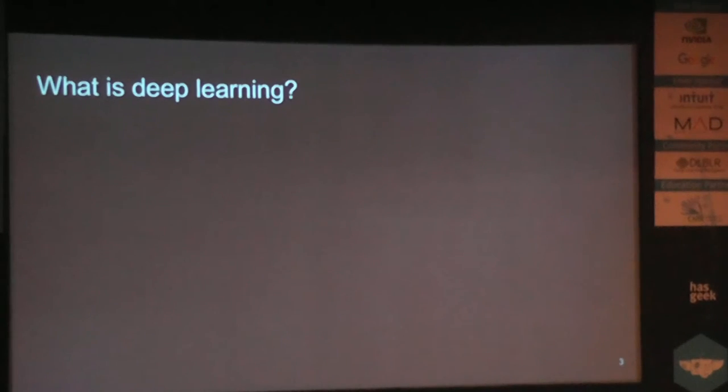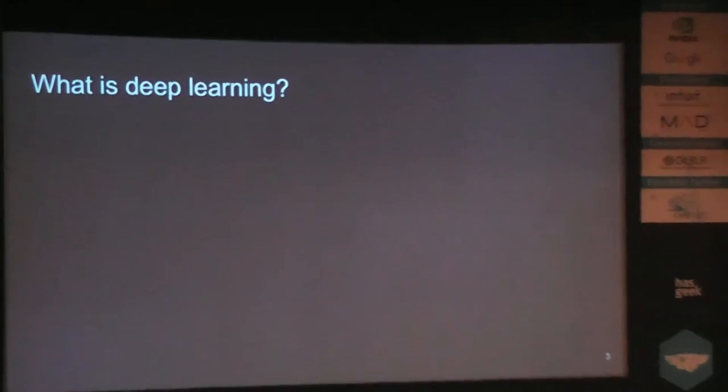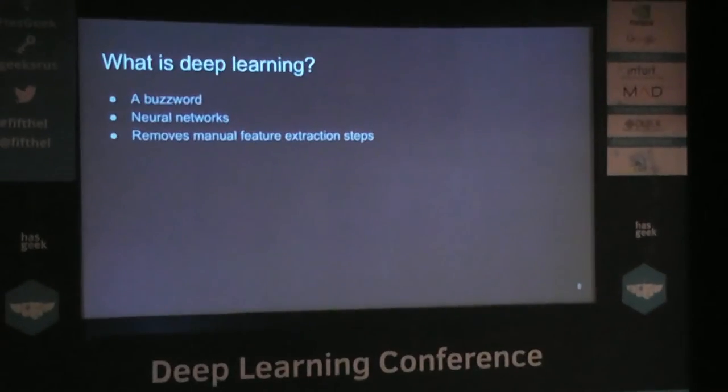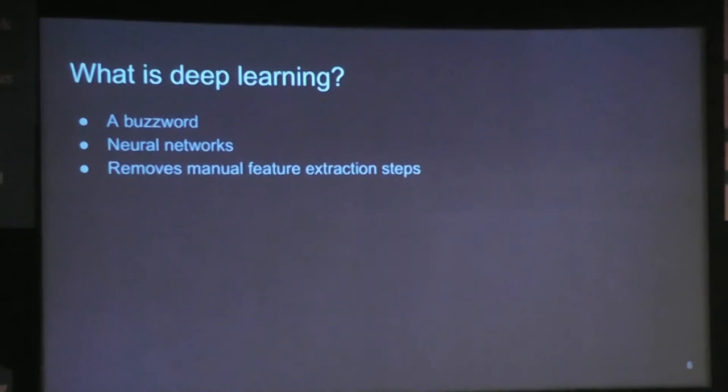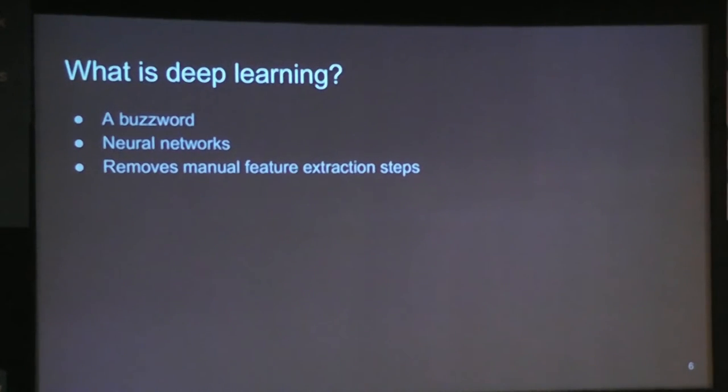Before we start with applied deep learning, we all want to know what deep learning is. Deep learning is now a buzzword — if you want a job as a data scientist, you must put deep learning on your resume. To me, deep learning is neural networks — not shallow but larger neural networks. Deep learning helps us remove manual feature extraction steps. Ten years ago when dealing with images, you used features like SIFT or SURF features, but you don't need them anymore because deep learning takes care of that.